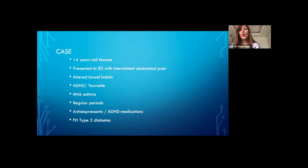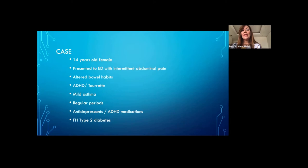On taking history, she was found to have altered bowel habits, and had a diagnosis in the past of ADHD and Tourette's for which she was on medications. She also had mild asthma. Her periods were regular and apart from being on antidepressants and ADHD medications, nothing of significance. There was a family history of type 2 diabetes.